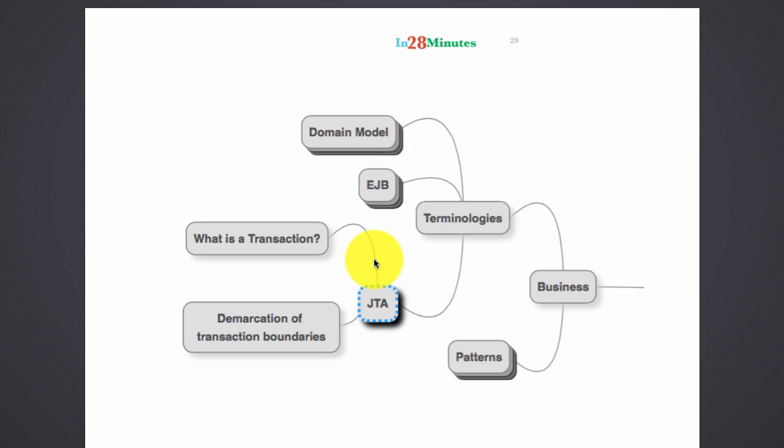Transactions prevent a system from being in an inconsistent state. Actually, I really made it very simple. There are a lot of complexities about a transaction, but in summary, a transaction is something where you have a set of steps. Either all the steps should succeed or none of them should succeed.